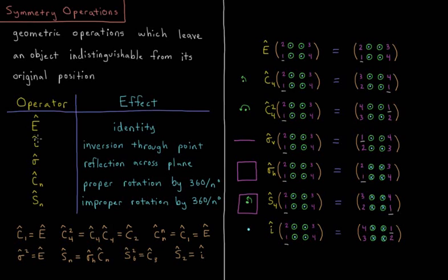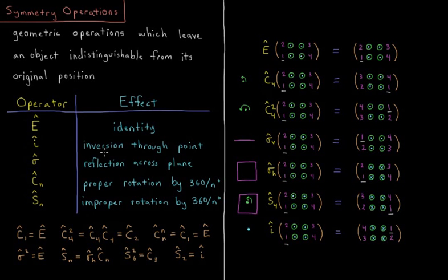The next is the inversion operator where we invert through a single point. For example, location one here inverts through the center, goes to the other side and points the opposite direction.